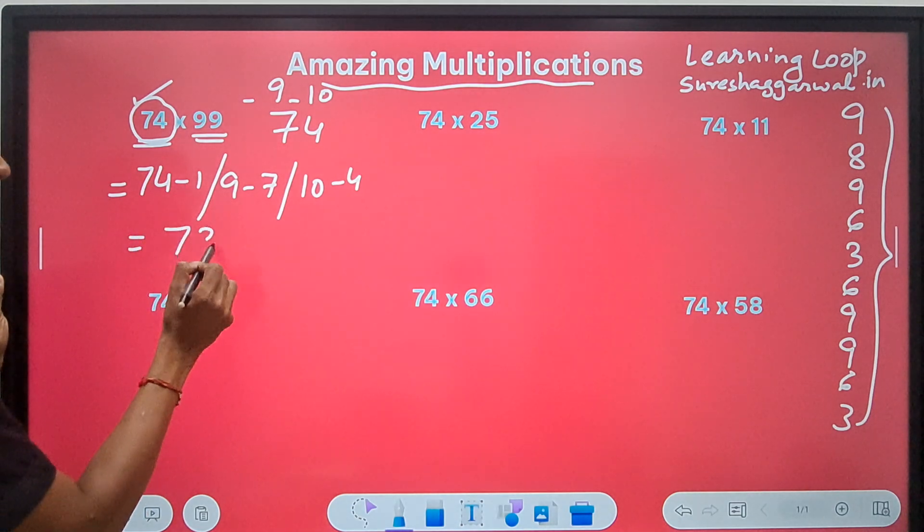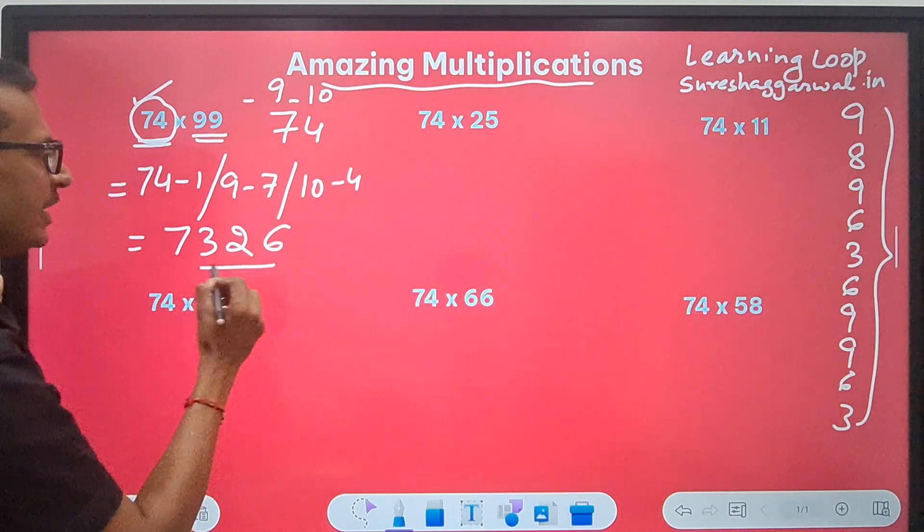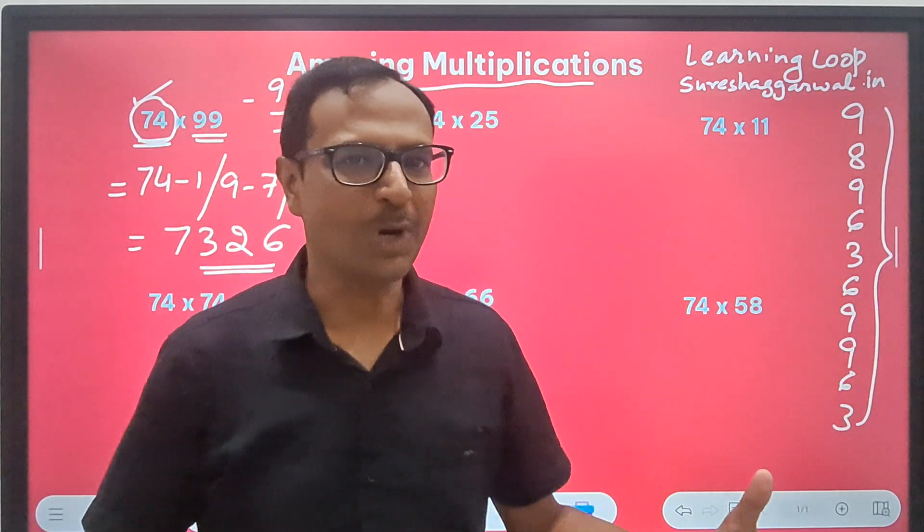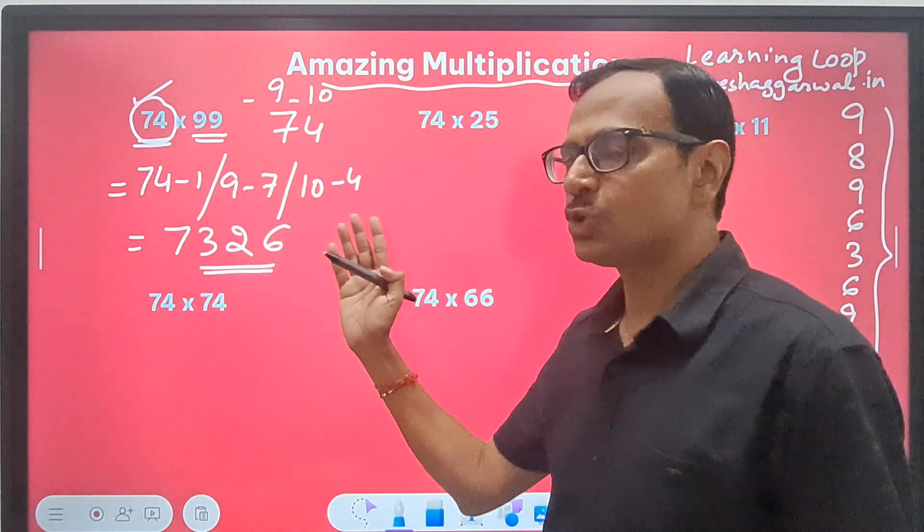What will be your answer? 74 minus 1 is 73. 9 minus 7 is 2 and 10 minus 4 is 6. Now, pick up the calculators and check the wonder of mathematics. This is called the wonder of mathematics.